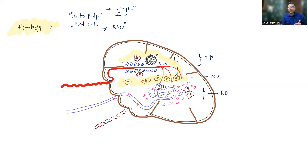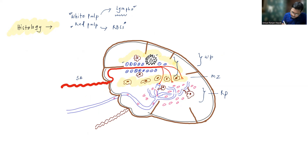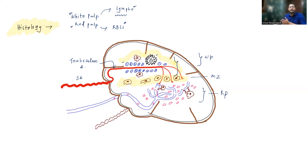We can start from the splenic artery and travel through it to understand what is inside the spleen. The splenic artery, after entering the spleen through the hilum, will form the trabecular artery. The trabecular artery will then form the central artery.